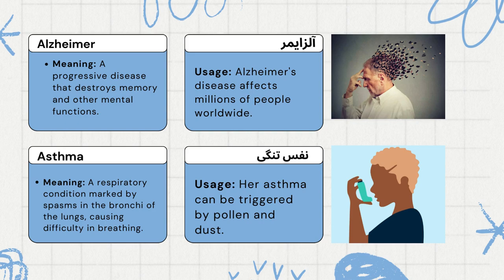Asthma. Meaning: a respiratory condition marked by spasms in the bronchi of the lungs, causing difficulty in breathing. Usage: Her asthma can be triggered by pollen and dust.